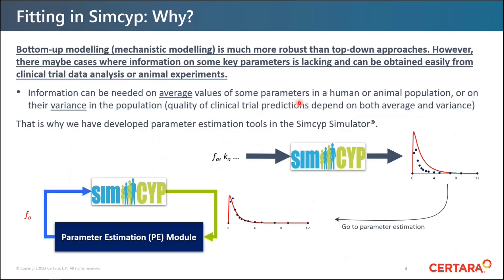Why do you want to do fitting in SIMSIP? We know that bottom-up mechanistic modeling is much more robust for prediction and extrapolation than top-down approaches. However, in some cases, information for key parameters may be missing — we do not have the in vitro data, or the information can be obtained more easily from clinical trial analysis or animal experiments. In that case, you would want to use those in vivo data to extract or improve parameter values.